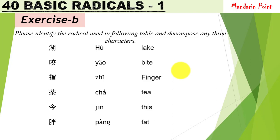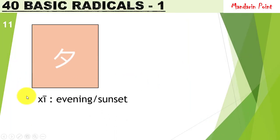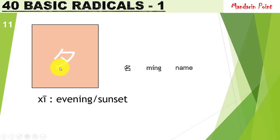Let's move to the next batch of radicals. Here we have 夕 xī, meaning 'evening' or 'sunset,' referring to evening, sunset, or night. For example, 名 míng meaning 'name' — it is a combination of 口 kǒu (mouth) and 夕 xī (evening). The logic is that after sunset you cannot see anyone, so you have to open your mouth to call them by name. So xī represents evening or sunset.